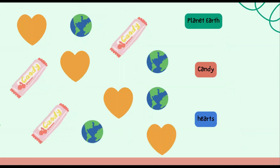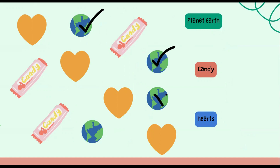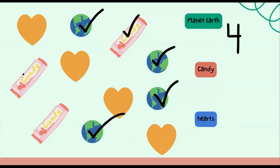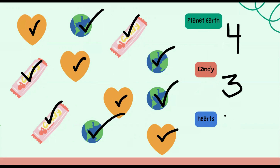On this set we have planet earth, candy, and hearts. First we're going to count planet earth: one, two, three, four. We have a total of four planet earths. Now we're going to count the candy: one, two, three. We have three candies. Now let's count our hearts: one, two, three, four. We have a total of four hearts. Okay students, I think we're ready for our next set.